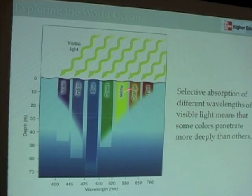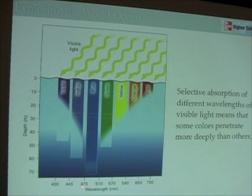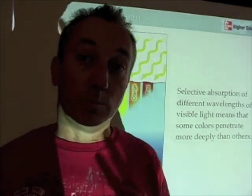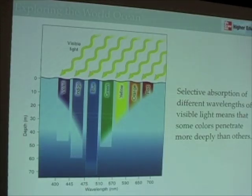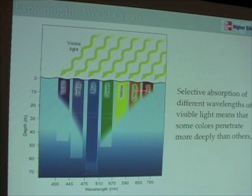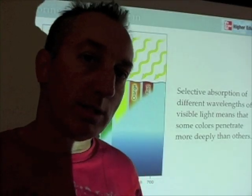Orange and yellow are the next to go. Indigo and blue, as you can see in this figure, with wavelengths around 445 nanometers — these wavelengths of light penetrate the deepest in the ocean. So if you're asking why the ocean is blue, this graph simply explains it. It's blue because blue is the color that is absorbed the least in the world ocean.